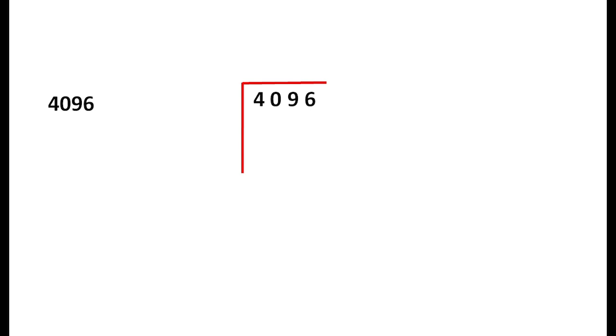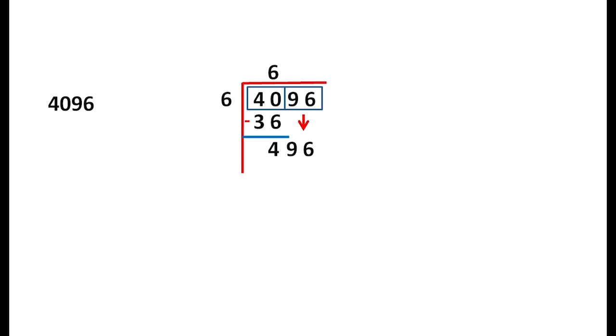Now we use the division method for another number. We use one splice to group two numbers, giving us two groups. The first group gives a perfect square: 6×6=36, 7×7=49. We use 6, and 6×6=36. We subtract 36, and the remainder is 4. We bring down 96.